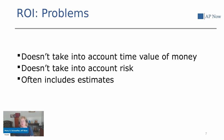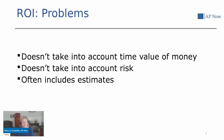The problem with ROI is it doesn't take into account the whole picture — it focuses on this one metric. It's an important metric, but it's only one piece of the puzzle. It doesn't take into account the time value of money. Oftentimes you're dealing with estimates of what that future value is going to be, and this calculation does not at all take into account risk. If you're just going to compare projects on an ROI basis, it's often difficult for your AP projects to get the investment dollars you need, even though many times those investment dollars are not huge.